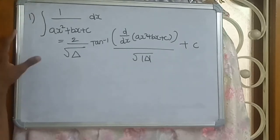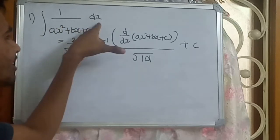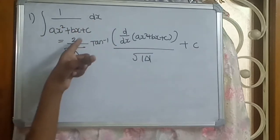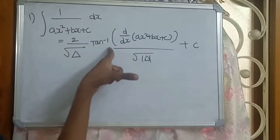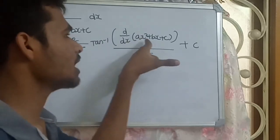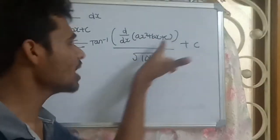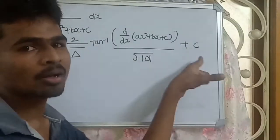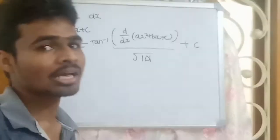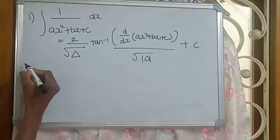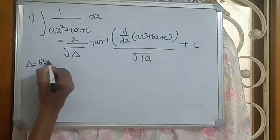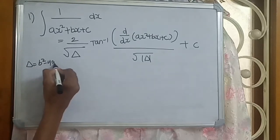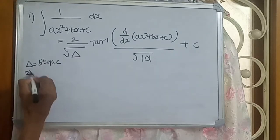The first formula: integration of 1 by Ax squared plus Bx plus C dx equals 2 by root delta times tan inverse of d/dx of Ax squared plus Bx plus C by root modulus of delta, plus C. Here, delta equals B squared minus 4AC.